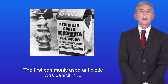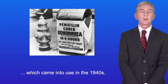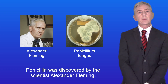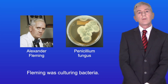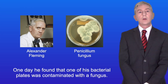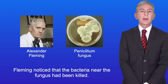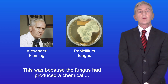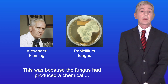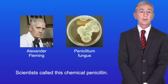Now the first commonly used antibiotic was penicillin, which came into use in the 1940s. Penicillin was discovered by the scientist Alexander Fleming. Fleming was culturing bacteria, and one day he found that one of his bacterial plates was contaminated with a fungus. Fleming noticed that the bacteria near the fungus had been killed, because the fungus had produced a chemical which was toxic to bacteria, and scientists called this chemical penicillin.